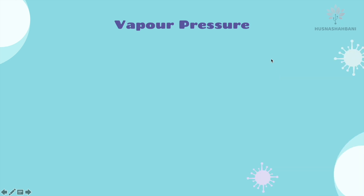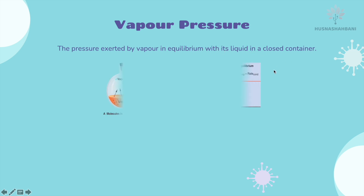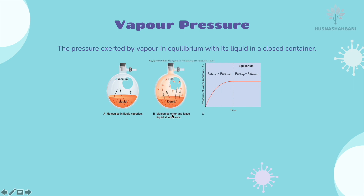Vapor pressure is the pressure exerted by vapor in equilibrium with its liquid in a closed container, meaning molecules enter and leave the liquid at the same rate. That is what is meant by equilibrium — some molecules become gas and some become liquid at the same rate.